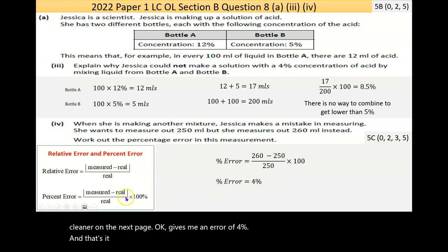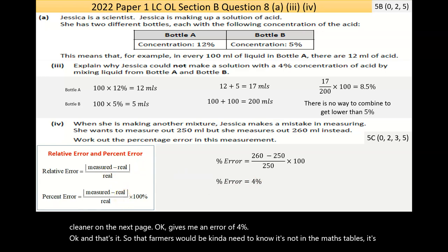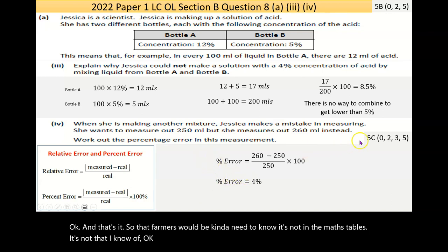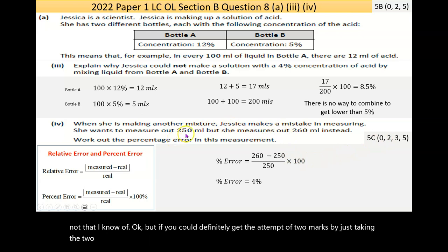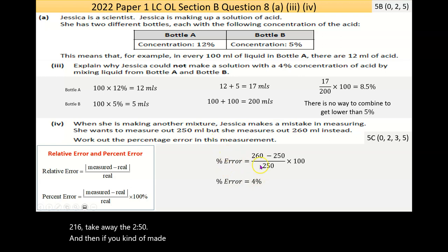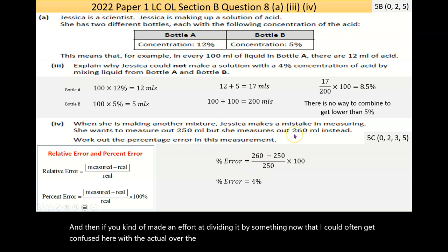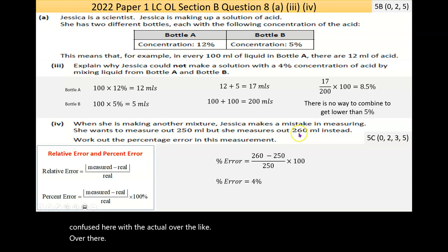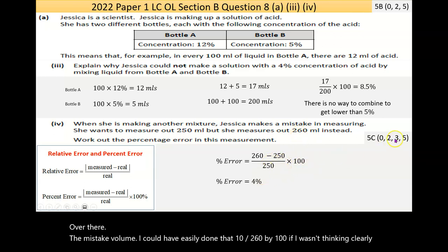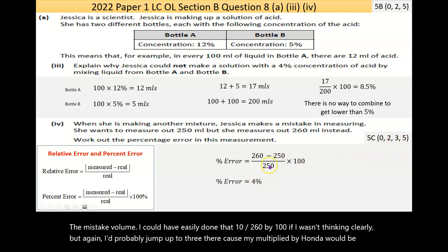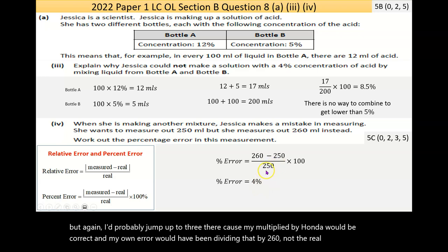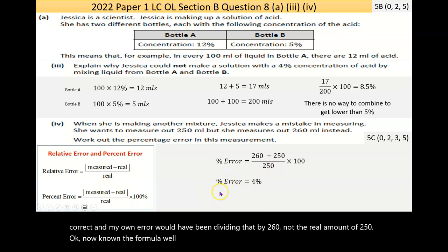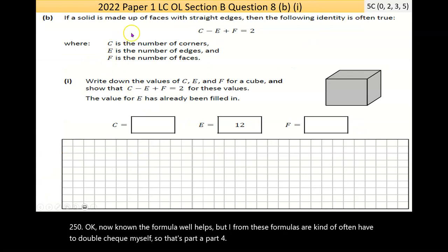So the percentage error is 4%. This formula isn't in the maths tables, so it's worth knowing. You'd get the attempt marks just by finding the 10ml difference. A common mistake would be dividing by 260 (the measured amount) instead of 250 (the actual intended amount), but you'd likely still pick up most marks.